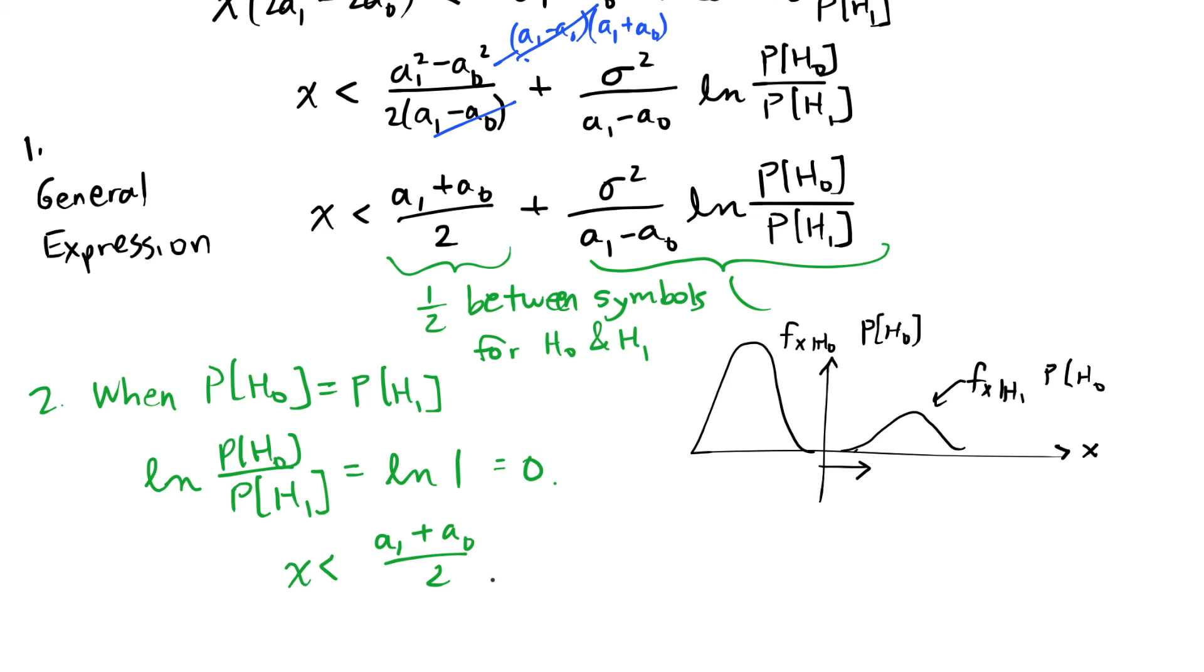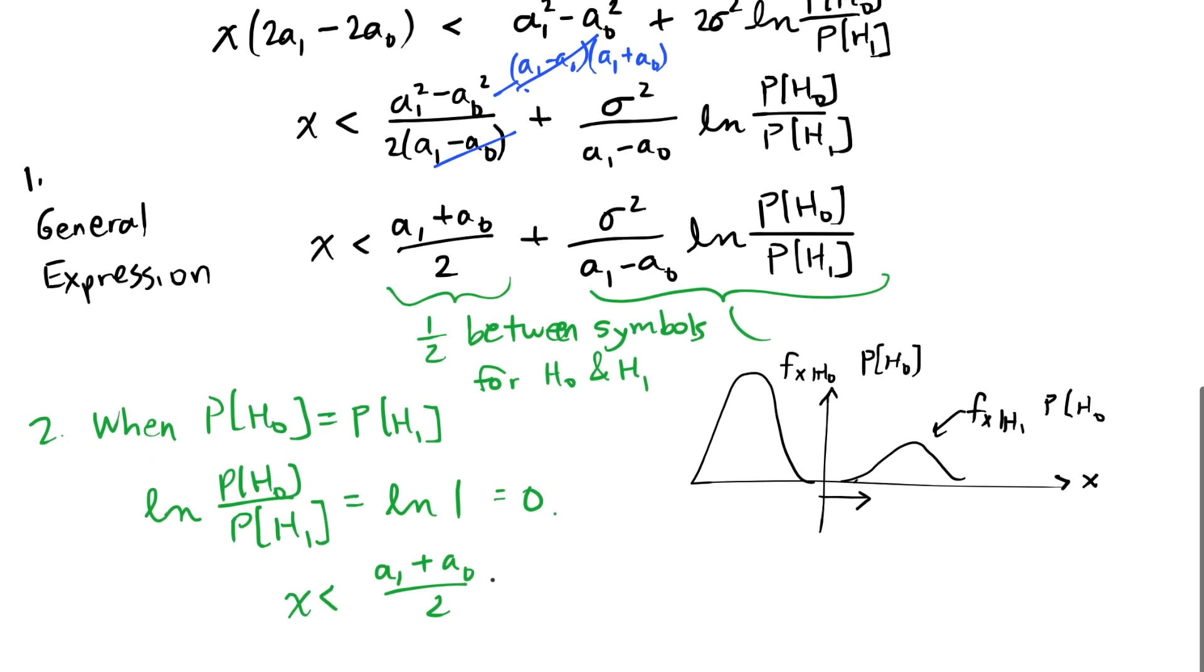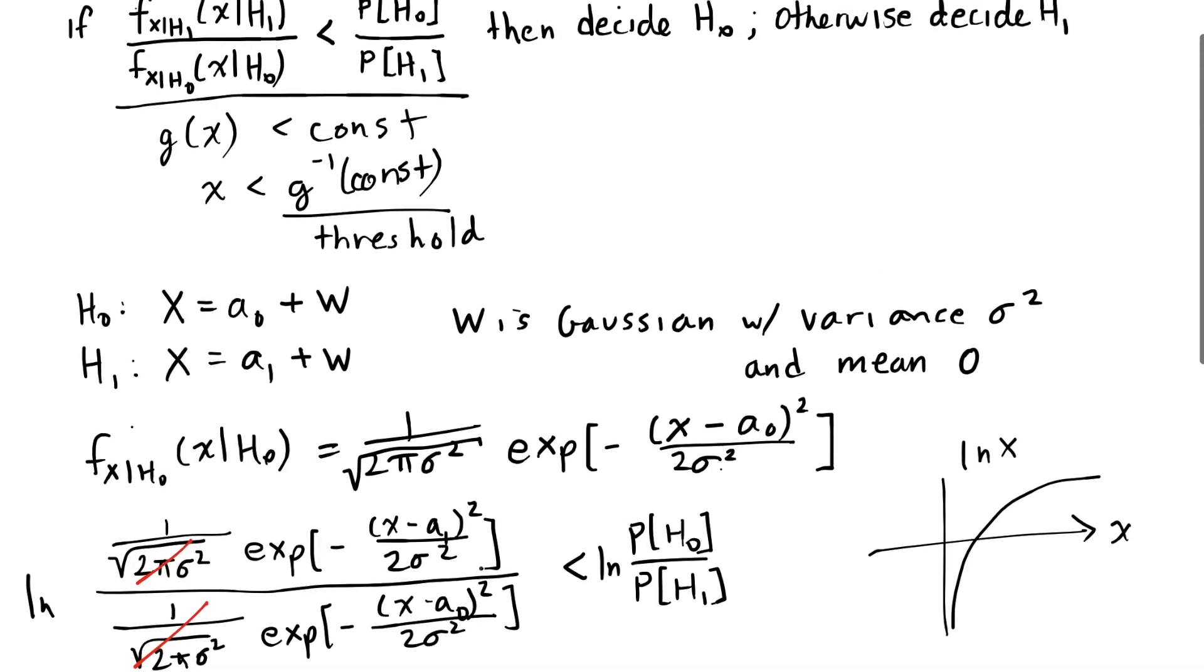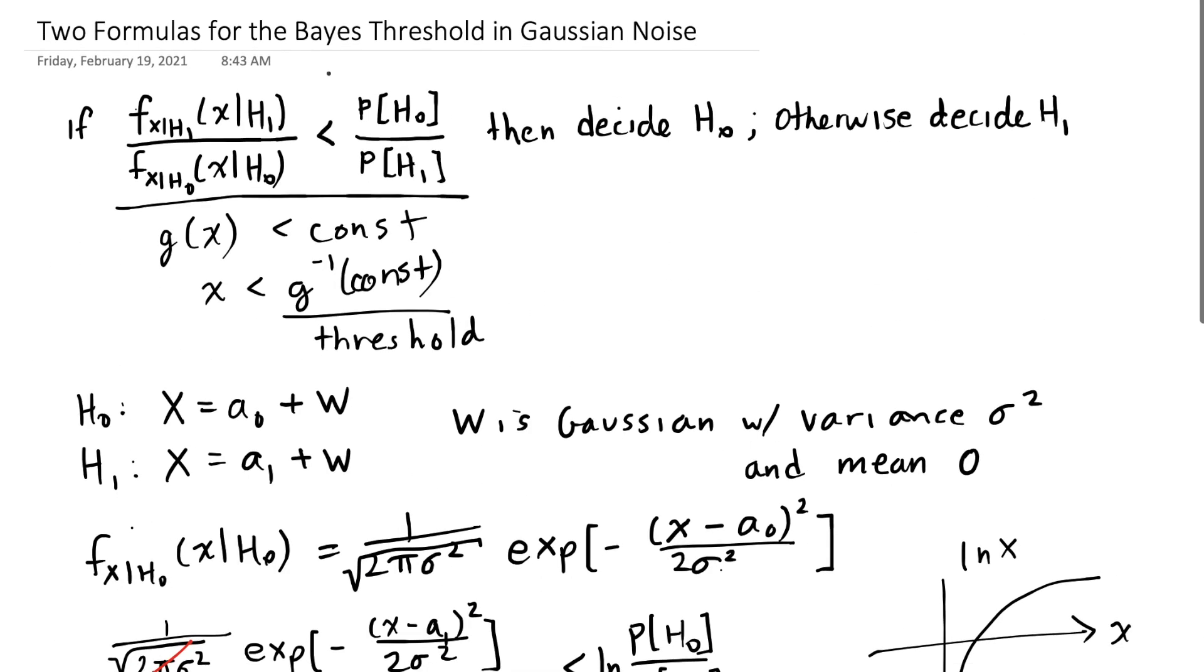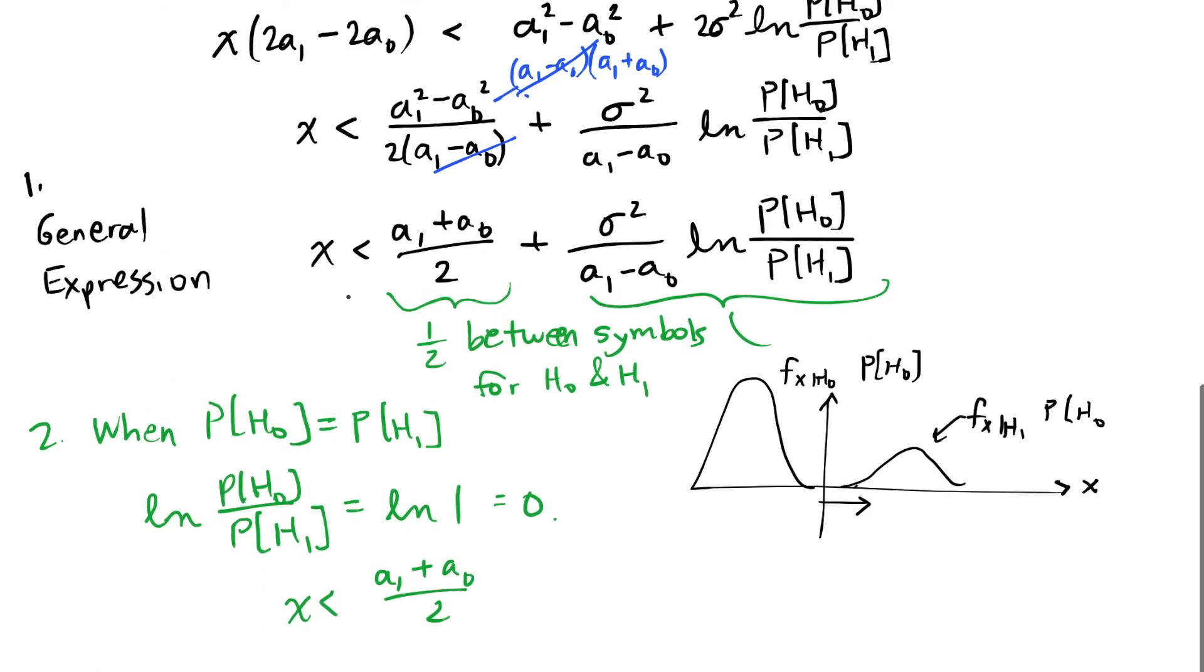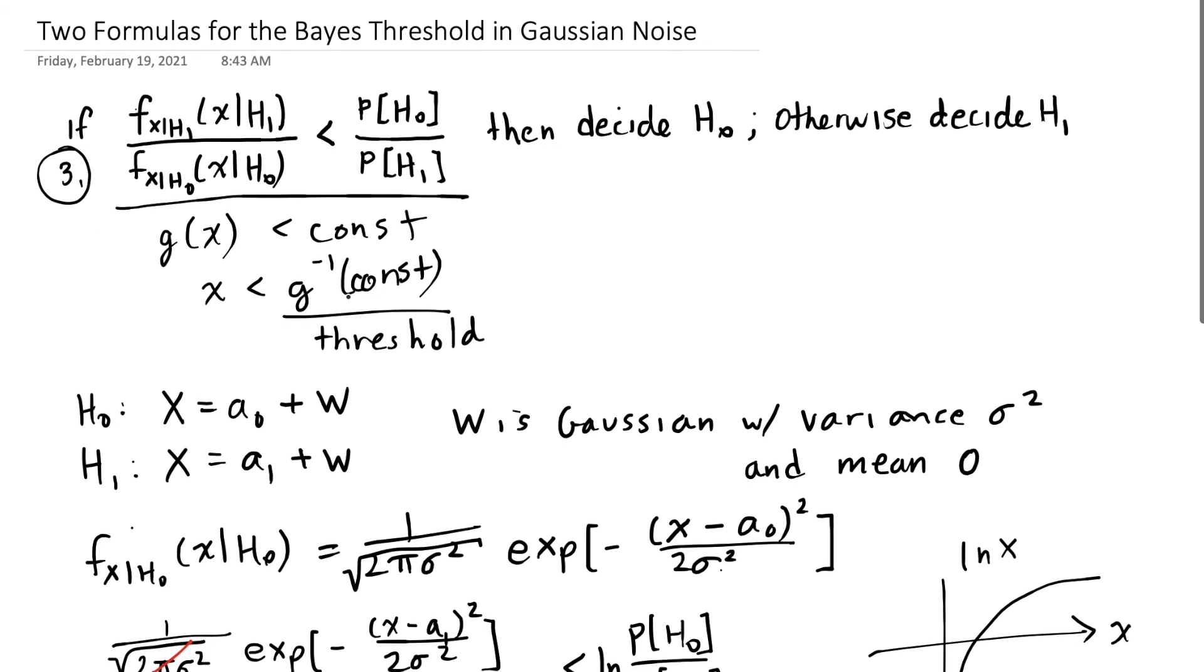When I say that I have two expressions, I'm really only talking about the Gaussian case. I also have a third expression that comes from this equation. If I have any arbitrary probability density function for x given h1 and h0, I can plug that into this formula, work on this inequality to get to a point where I'm talking about x being less than or greater than a particular threshold. So that's all I have in this segment, and what I have here then are really three expressions for the Bayes threshold in different types of noise.